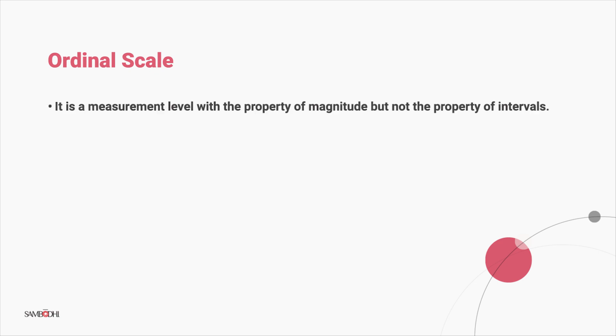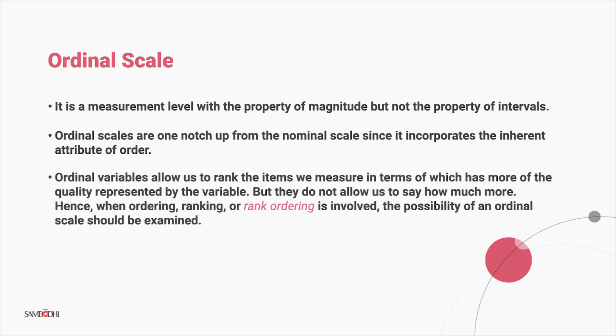It is a measurement level with the property of magnitude, but not the property of intervals. Ordinal scales are one notch up from the nominal scale since it incorporates the inherent attribute of order. Ordinal variables allow us to rank the items we measure in terms of which has more of the quality represented by the variable, but they do not allow us to see how much more.